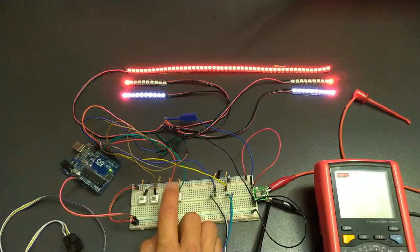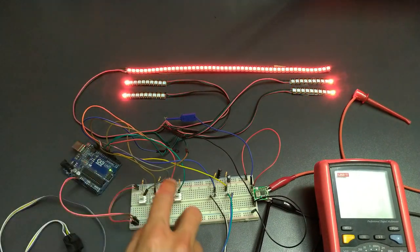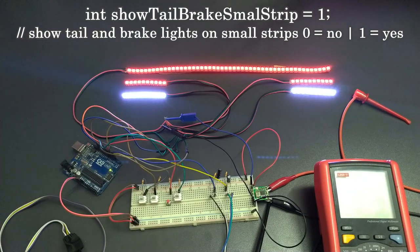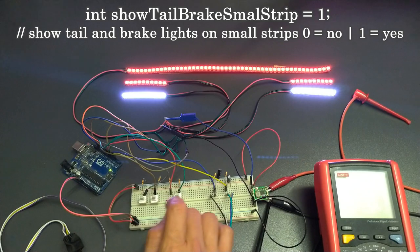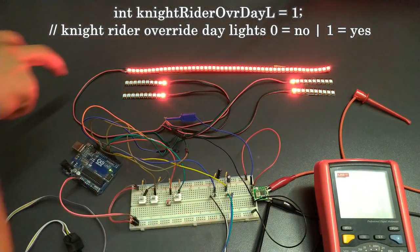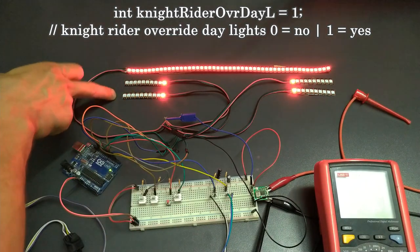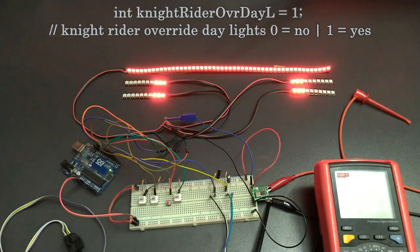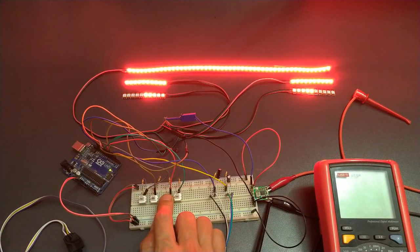And we have night rider lights. You also have the option for taillights to be shown or not on the small strips. And you also have the option for the night rider to override the day lights and the taillights on the small strip. But brake lights will override everything.